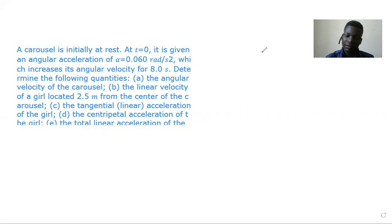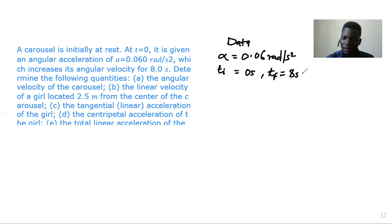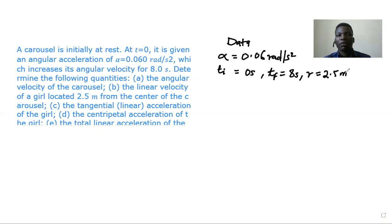We've been given angular acceleration of 0.06 rad per square second. We have initial time of zero seconds, final time of eight seconds, and radius r of 2.5 meters. Apart from that, we're told the gear is initially at rest, meaning the initial angular velocity is zero rad per second.